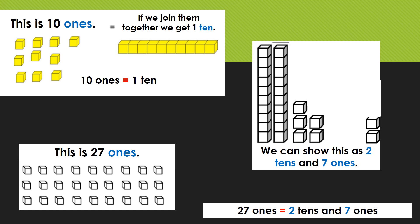Let's go a little deeper into the idea of groups of tens and ones. If you look in the upper left hand corner of your screen, you will see that I have ten cubes. If I join them together, then I will have one group of ten. So this means that ten ones equals one ten, or ten ones is the same as one ten.